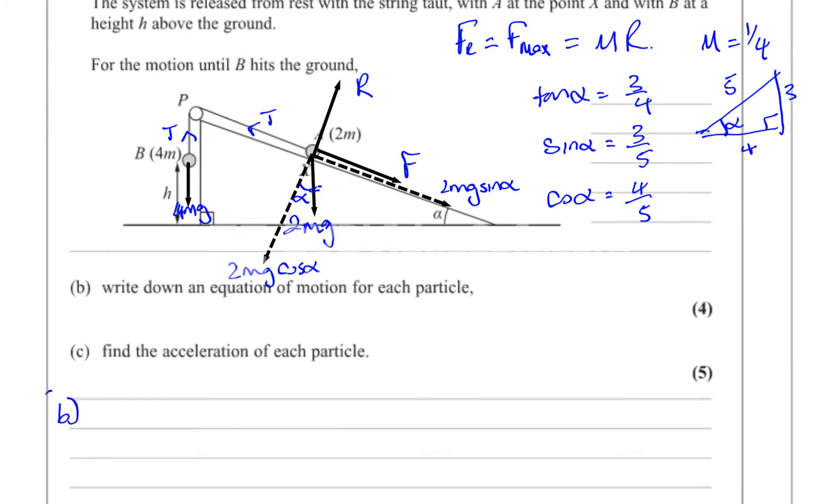Part B says write down an equation of motion for each particle. So if we consider B first, because there's less forces acting on it, you can see it's heading down, because B is going towards the ground. Now, for B, it's going down, so if we resolve the forces, F equals ma. The resultant force is mass times acceleration. The resultant force acting on B is 4mg. I'm going to take down as positive for B, because it's moving down. So down is positive. I can say that 4mg minus T is equal to ma. The mass is 4m, so it's 4ma. So that's one equation we found. That's an equation of motion for particle B.